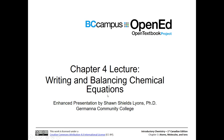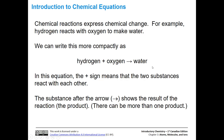Writing and balancing chemical equations. Let's talk a little bit about chemical equations. We're going to talk about how to write them, and then how to balance them, which is a very important skill in chemistry. Chemical reactions express chemical change. So if we want to say that hydrogen reacts with oxygen to make water, we could write it more compactly like this in words: hydrogen plus oxygen gives us water.